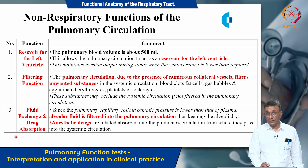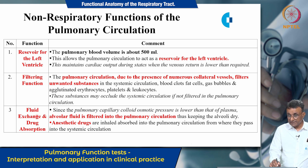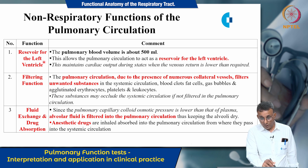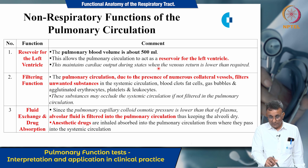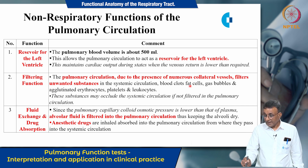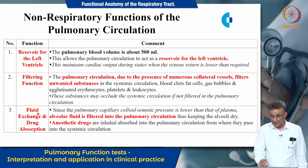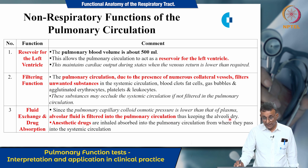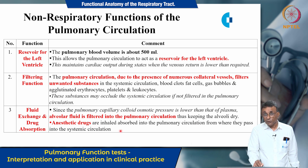The non-respiratory functions of the pulmonary circulation include three roles: serving as a reservoir for the left ventricle, a filtering function, and participating in fluid exchange and drug absorption. The pulmonary blood volume is about 500 ml, which can be translocated to the systemic circulation when cardiac output is low. The narrow pulmonary vessels filter unwanted substances such as blood clots, fat cells, and gas bubbles. Since pulmonary capillary colloid osmotic pressure is lower than that of plasma, alveolar fluid is filtered into the pulmonary circulation, keeping the alveoli dry. Most anesthetic drugs are absorbed into the pulmonary circulation before passing into the systemic circulation.